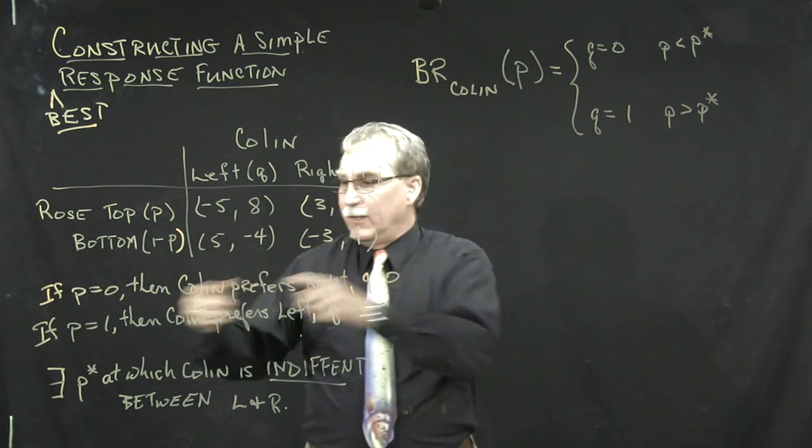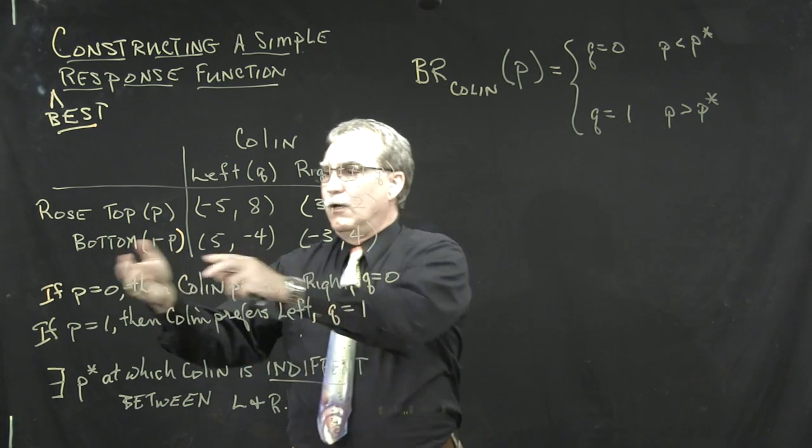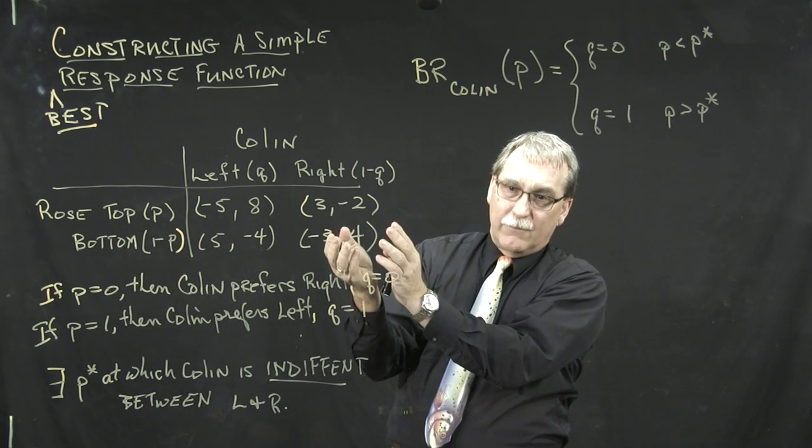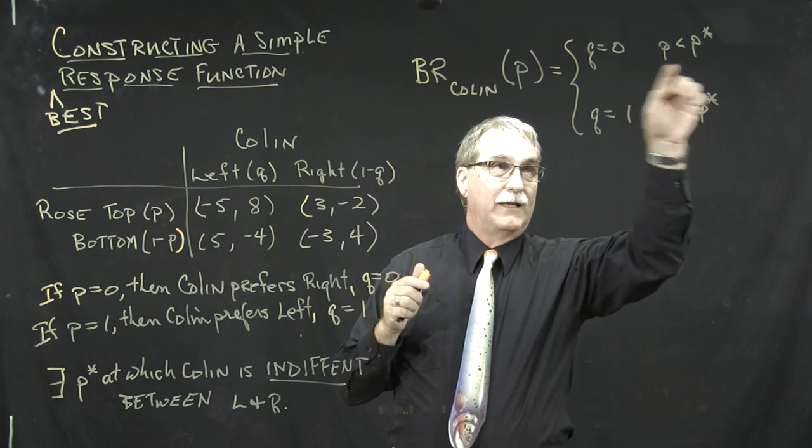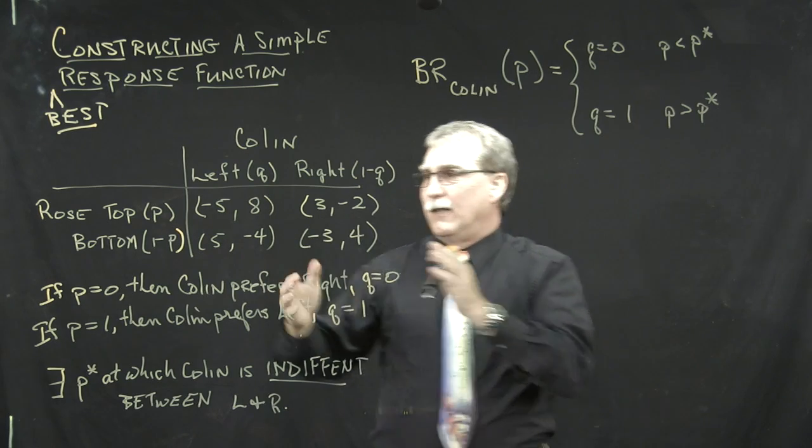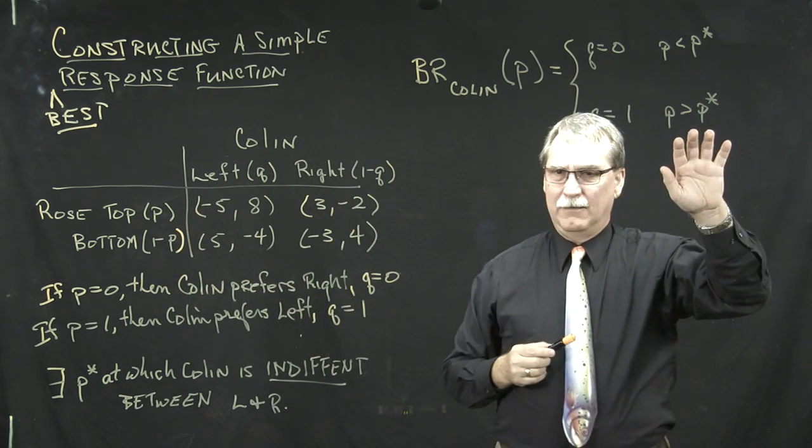If P is really close to 0, the closer this is to 0, the more likely that Rose is going to be in the bottom. Colin really wants to be over here in the right-hand column. That's what this is telling us. If P is very close to 1, Colin really wants to be in the left-hand column.